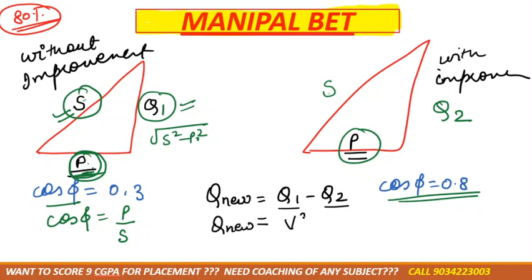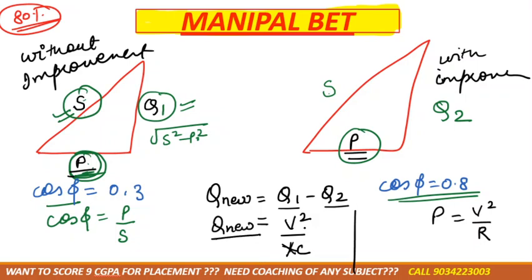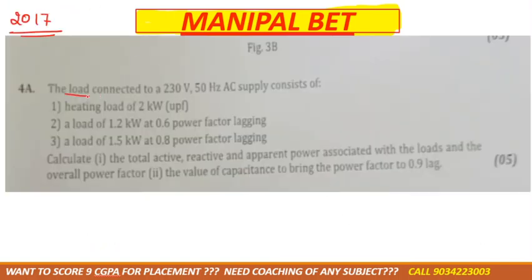Q2 = V²/Xc. The general power formula is P = V²/R — similarly for capacitor, Q = V²/Xc. So Xc is found from V and Q. The voltage given is 230V at 50Hz. The capacitance C is then found using Xc = 1/(2πfC).